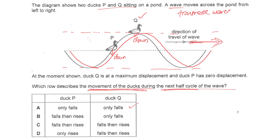If the question were to ask you the movement of the ducks the next moment, then A would be the answer because both are going down. But this question asks for the next half cycle, so there are more things we need to consider.